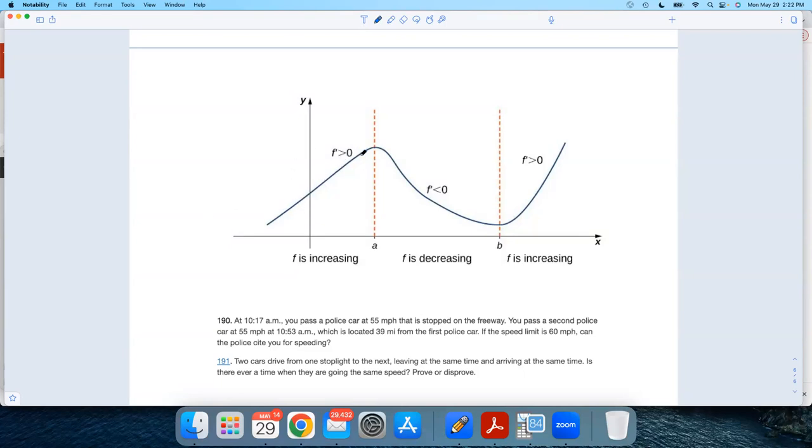All of my tangent lines here have positive slopes in this region. Like, let's look at this tangent line right there. That would look something like that as a negative slope. This tangent line would look maybe something like this. Positive slope. Positive slopes. Positive slopes.